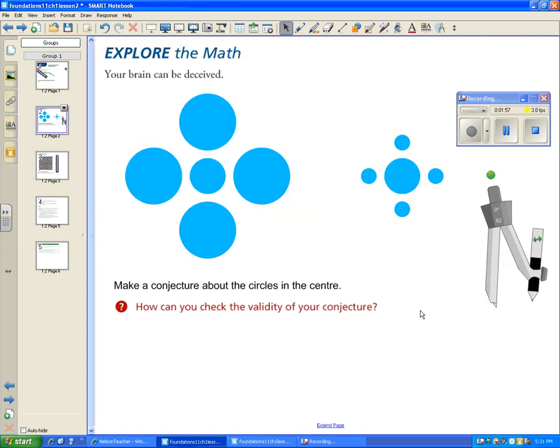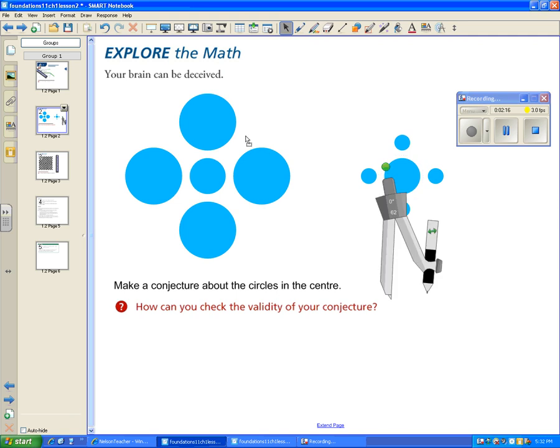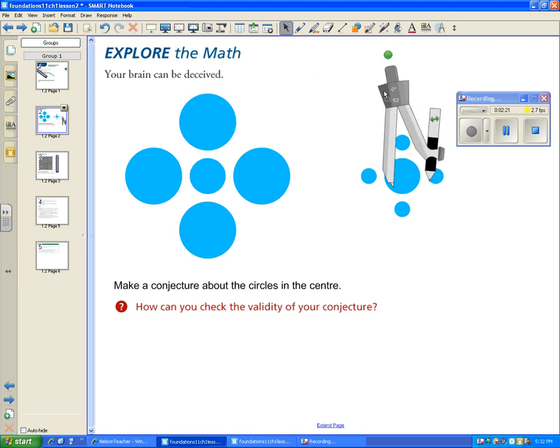Here's another brain teaser. Make a conjecture about the circles in the center. So this circle right here compared to this circle right here, a conjecture you might make is that this first one is smaller than the second one. However, if we used a tool, we can see that the size of this circle is actually identical to the size of that circle.